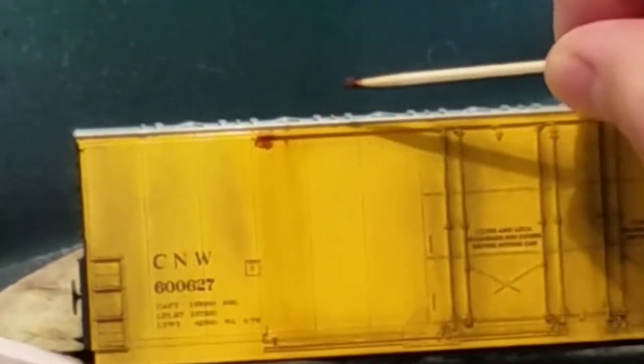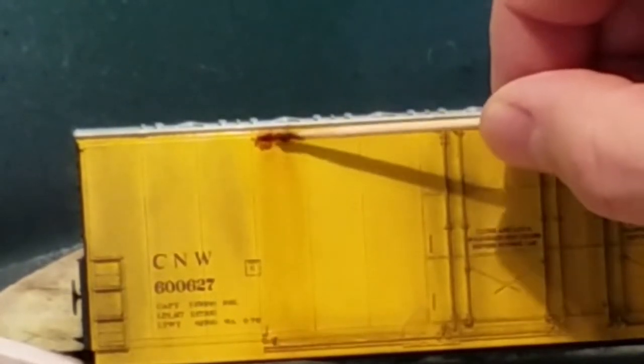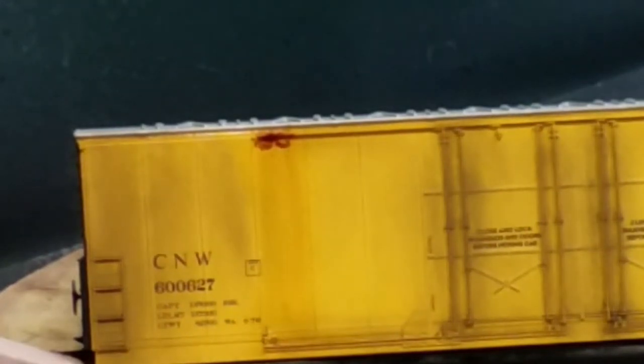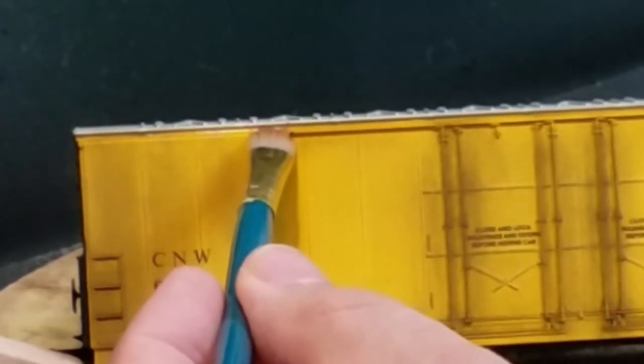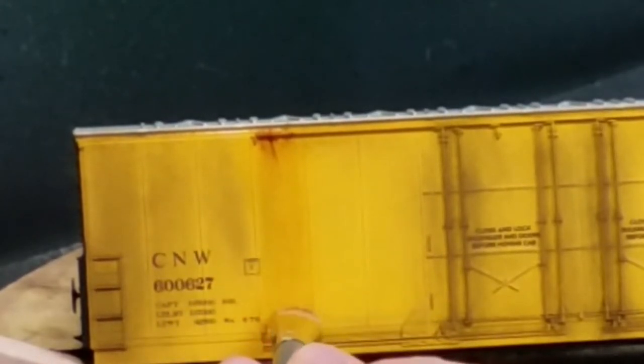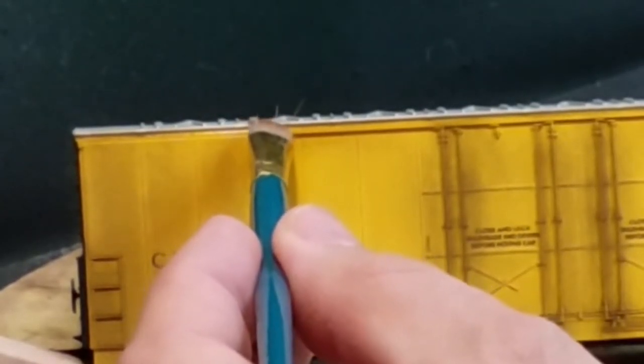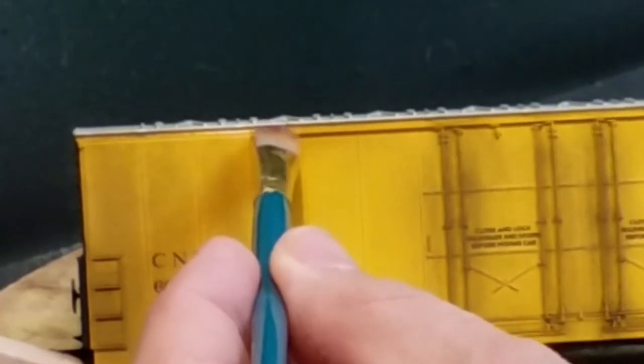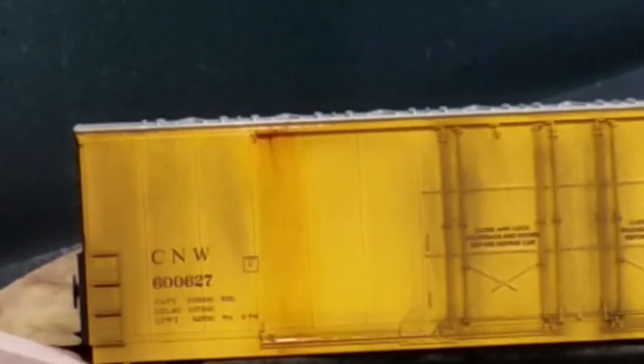Now that my original grime is applied using the weathering powders, I come back with oil-based paint here and start the streaking process. Here I put some oil-based paint on with a toothpick and then I dip my brush in turpentine or mineral spirits or paint thinner and go ahead and start pulling down. When you do streaking, you have to make sure that you do straight up and down strokes. The streaks don't go sideways.